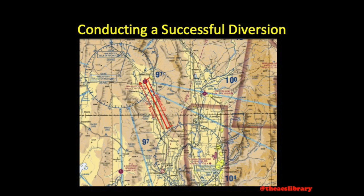Using our plotter, we may determine distance and heading to the airport. Remember to use the proper side of the plotter when determining distance, as one side may be scaled to nautical miles while the other is scaled to statute. We find a distance of 15 nautical miles from our current position to our alternate airport and a desired course of 336 degrees, but we must remember to account for magnetic variation. In this region, we would subtract 12 from our desired course of 336 to find our desired heading of 324. Don't forget to write this information down.